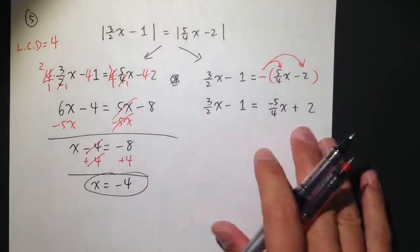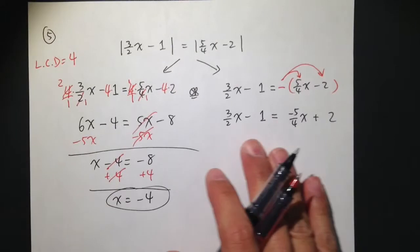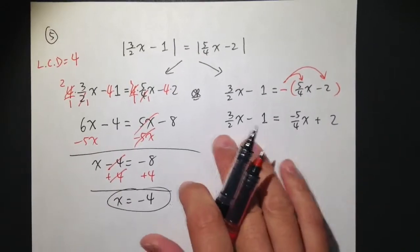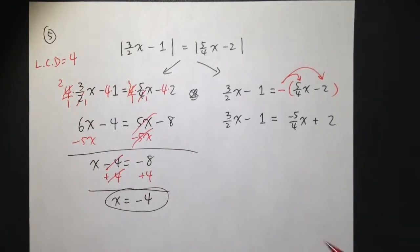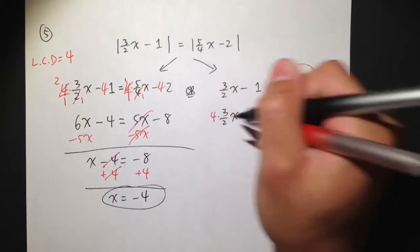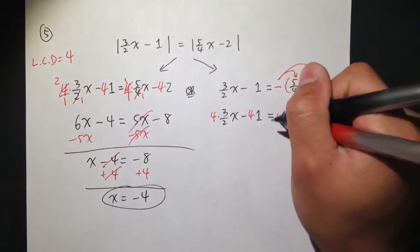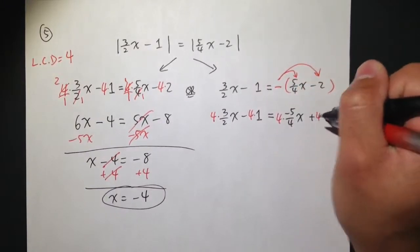And again, similar situation, we have an equation that has fractions, and they are the same fractions. We are going to multiply by the lowest common denominator, which is 4. So, let me just put 4 times that, 4 times that, 4 times that, and 4 times that.